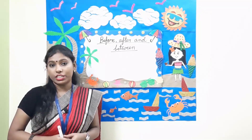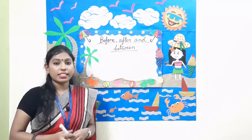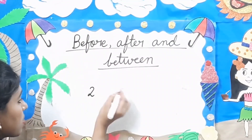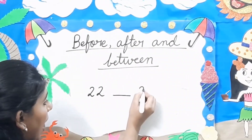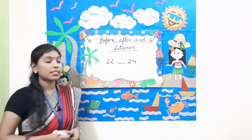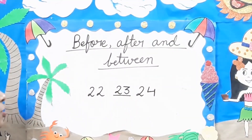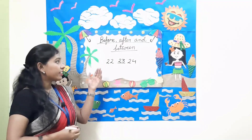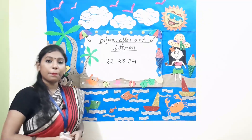Now what is between? Between means in the middle. For example, what comes between 22 and 24? 23 comes between 22 and 24. In this way you are going to write the numbers which come in between.